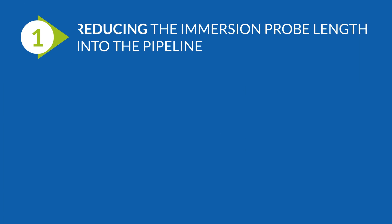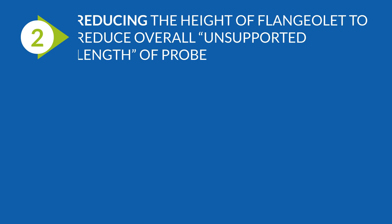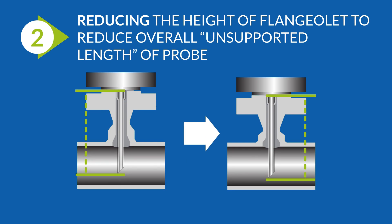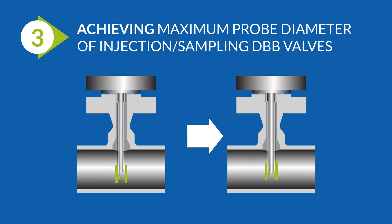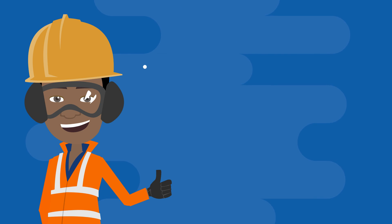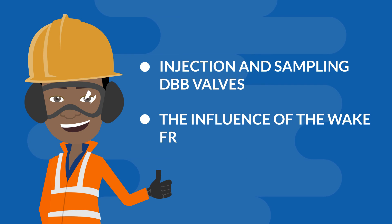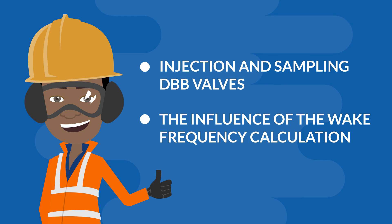First, reducing the immersion probe length into the pipeline. Second, reducing the height of the flangeolet to reduce the overall unsupported length of the probe. Third, achieving maximum probe diameter of injection or sampling DBB valves. There you have the most relevant facts about injection and sampling DBB valves and the influence of the wake frequency calculation on the use of a support collar.